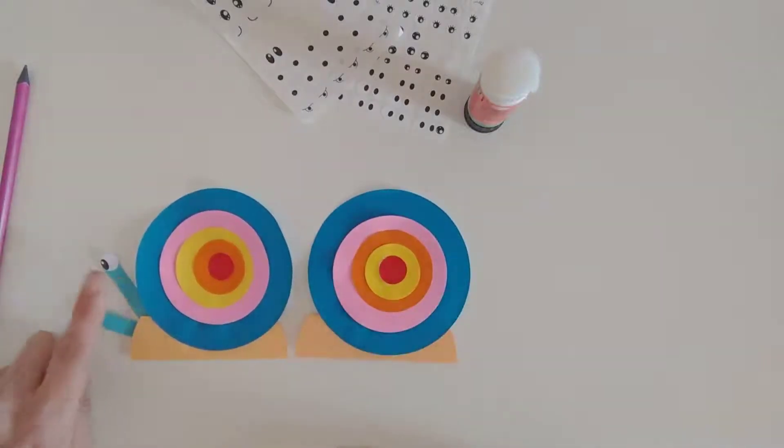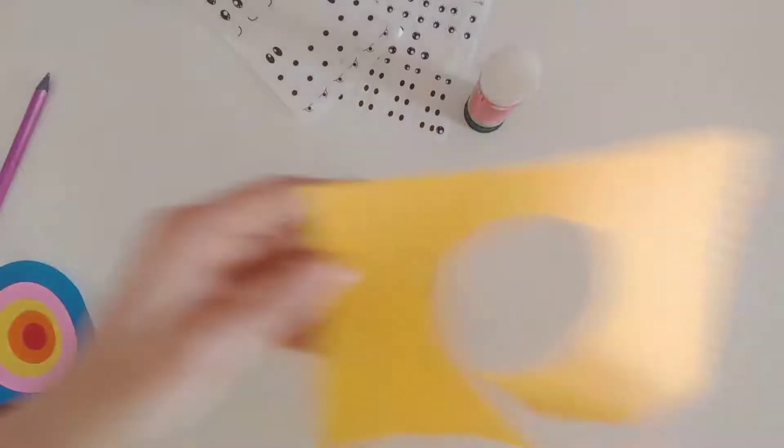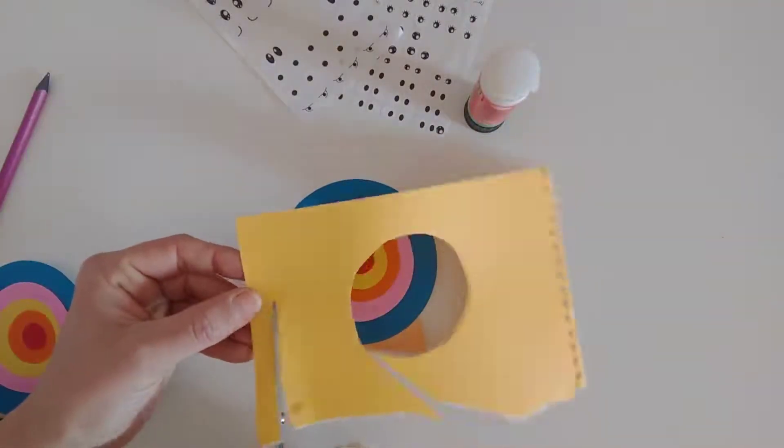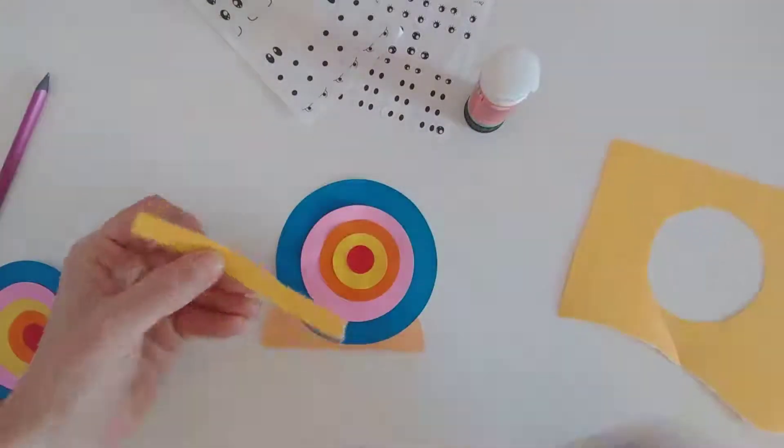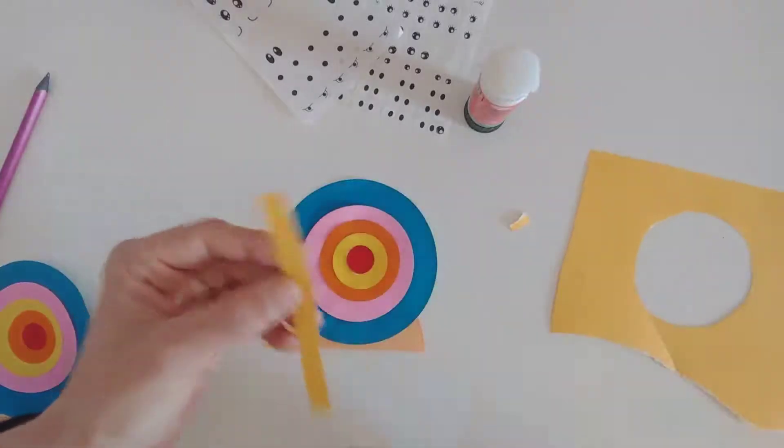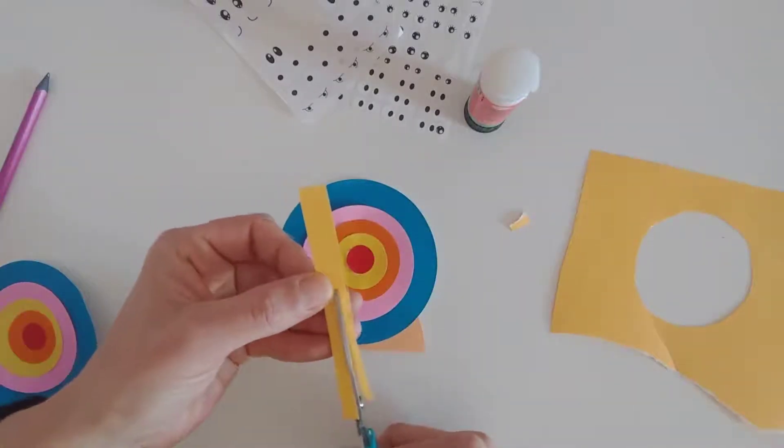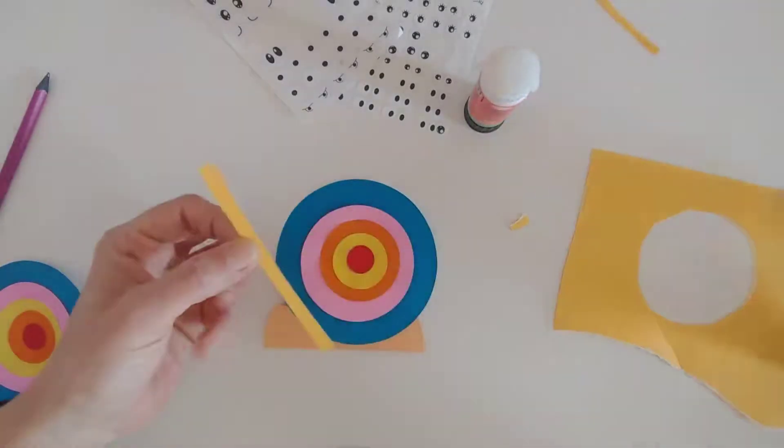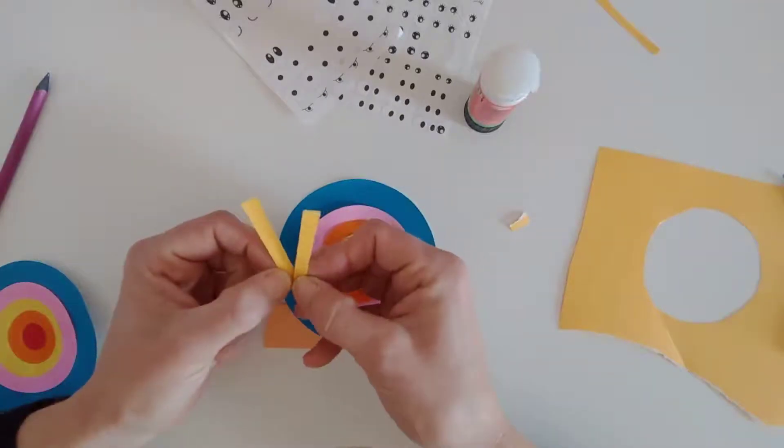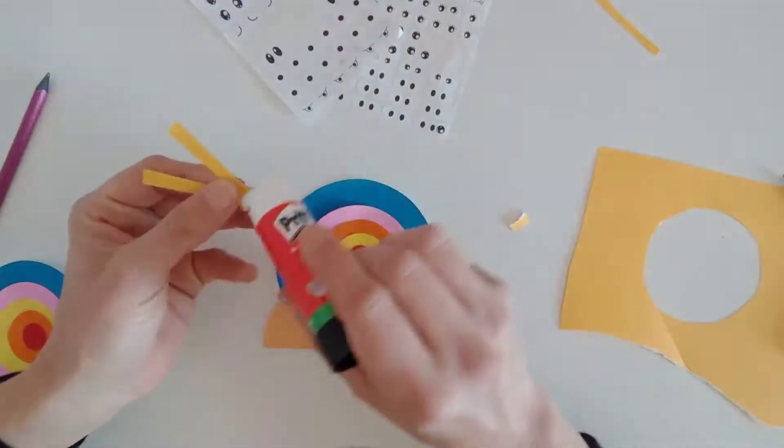I need to make antenna. So I take some paper. Cut it. It's a bit big. Make it thin. Okay. Fold in half. Put the glue.